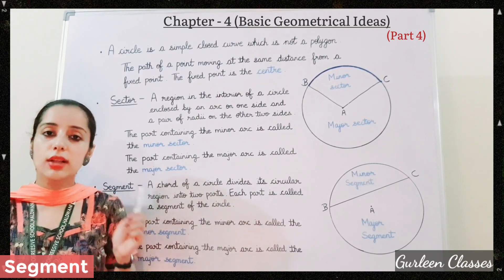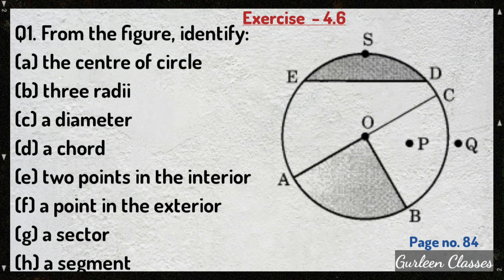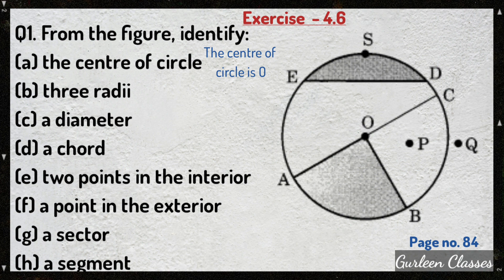Now let us solve exercise 4.6 based on these topics. Open your NCERT book, page number 84. Question number 1: From the figure, identify — part A: the center of the circle. Here, point O is the fixed point, so the center of the circle is O. Part B: 3 radii. Radii is the plural form of radius, and the radius connects the center to a point on the circle. Here, center is O, so the 3 radii are OA, OB, and OC.